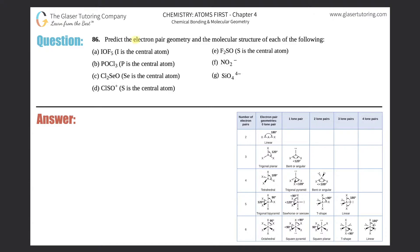Problem 86: predict the electron pair geometry and the molecular structure of each of the following. We've done maybe six or seven problems just like this so you should get the hang of it. We need to know Lewis structures to get these problems correct. If this is your first video on electron pair geometry and you're not comfortable with Lewis structures, go back to question 40 in this chapter — we do tons of problems starting from there.